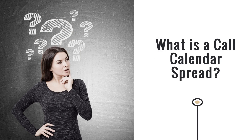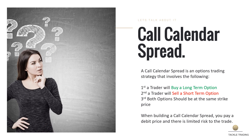A call calendar spread is an options trading spread. It involves a couple of different components. First, a trader buys a long-term option. Second, you will sell a short-term option. The relationship of those options being in different expirations is what makes it a calendar spread. All of these options should be call options to make it a call calendar spread.